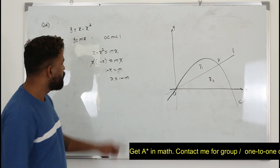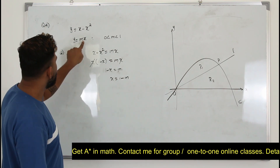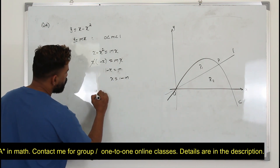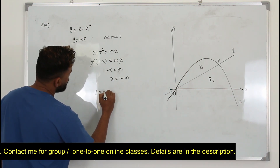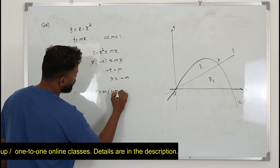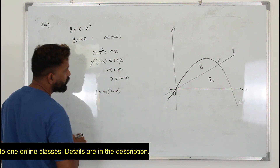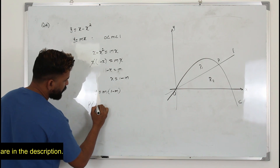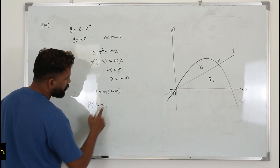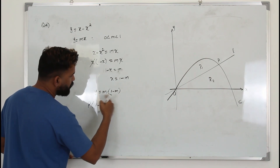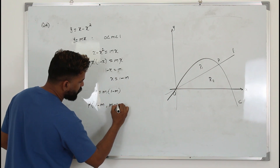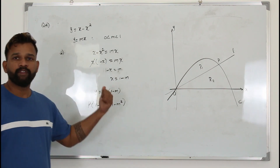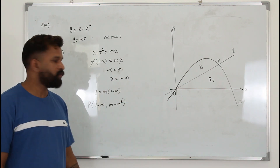To find the y-coordinate, replace x with one minus m, so y equals m times one minus m. The point P is (1 minus m, m times one minus m), or opening the bracket: m minus m squared. That's the answer for part a.